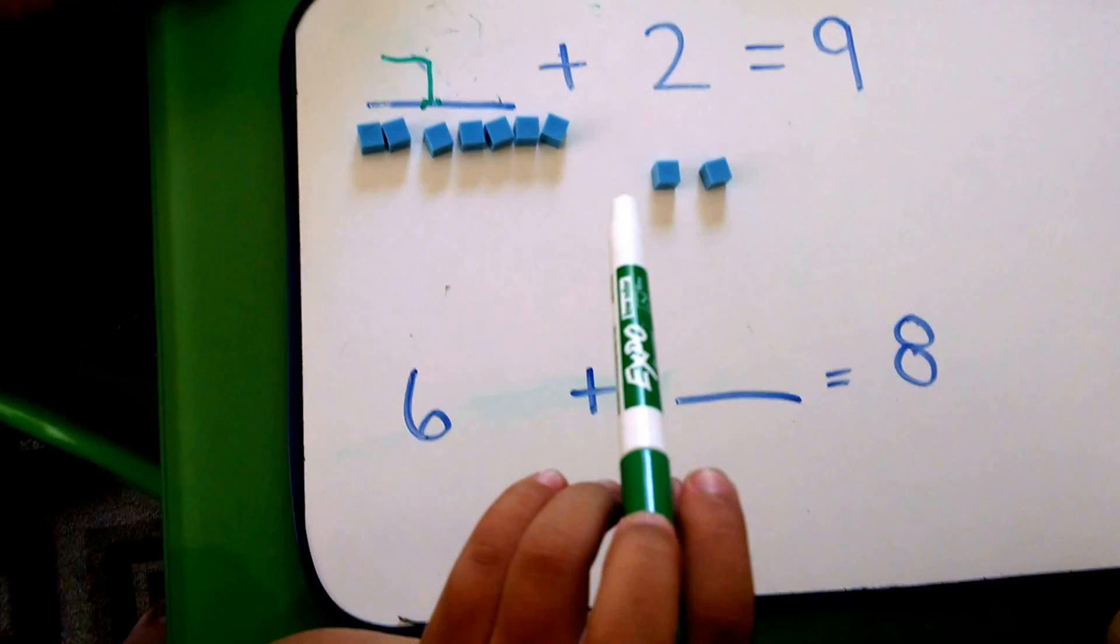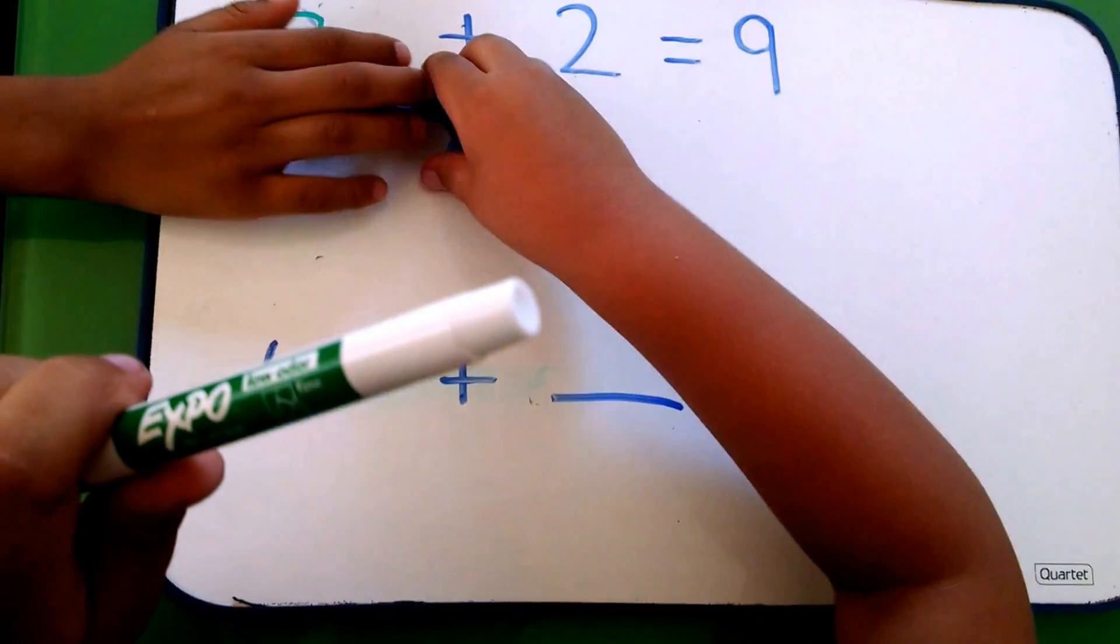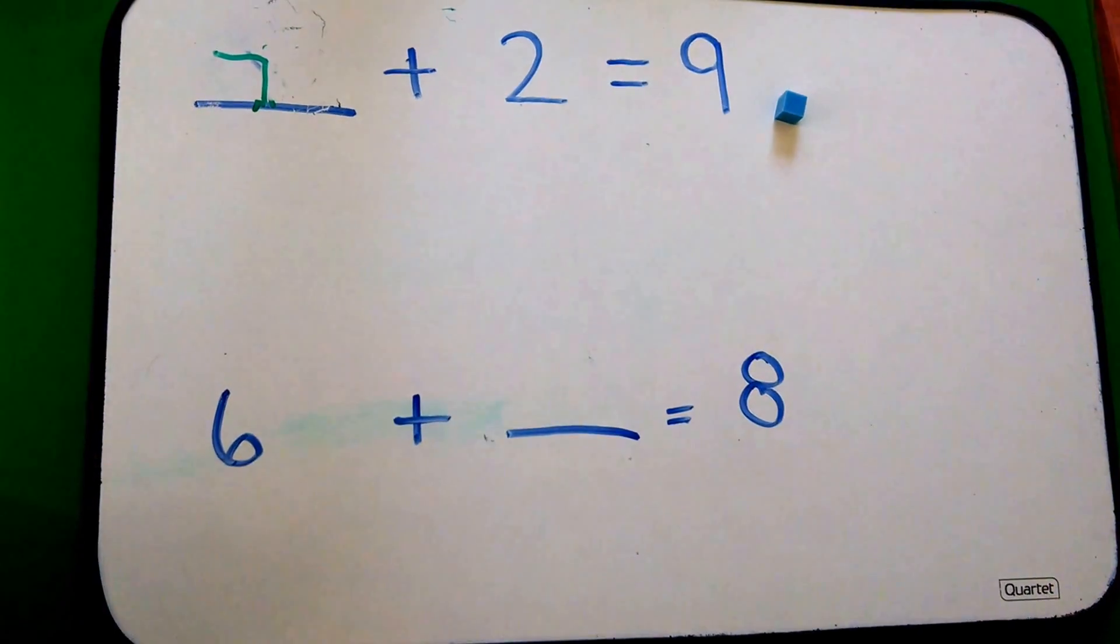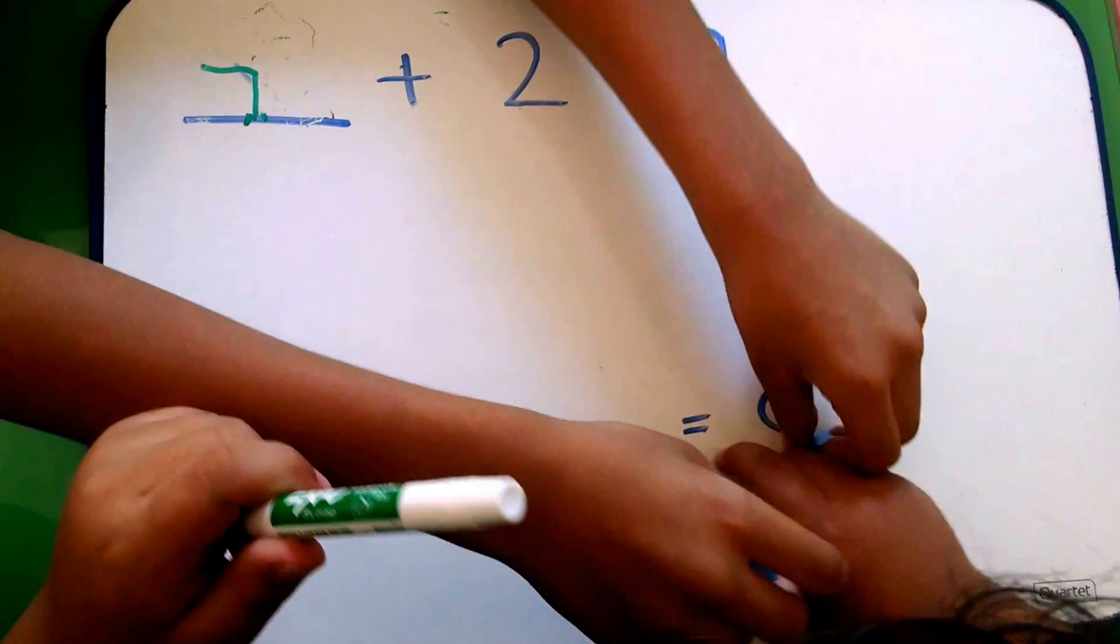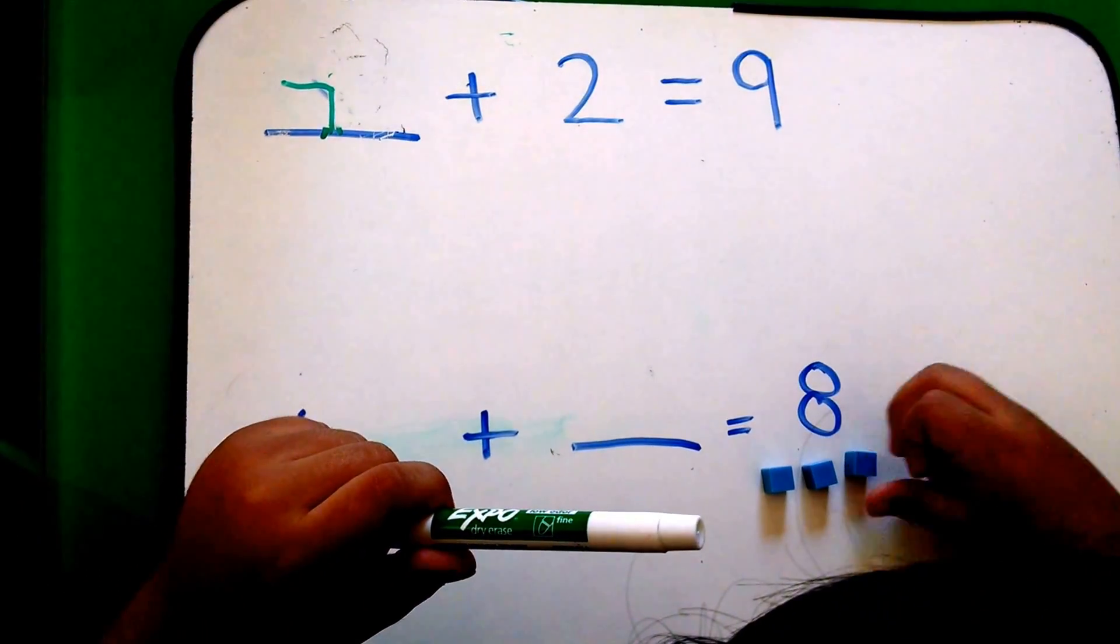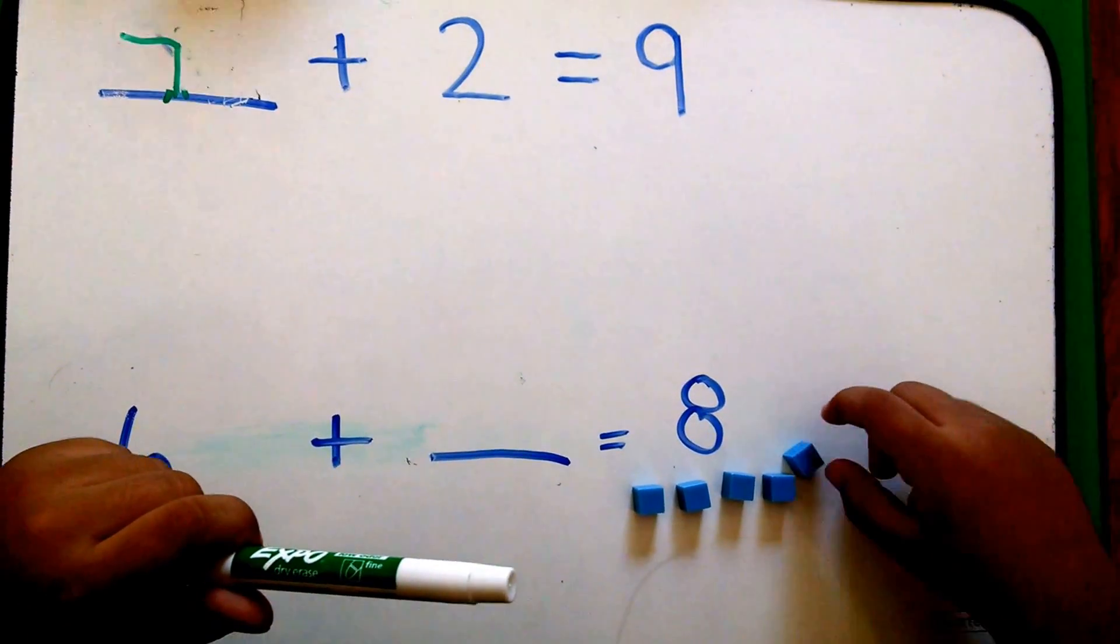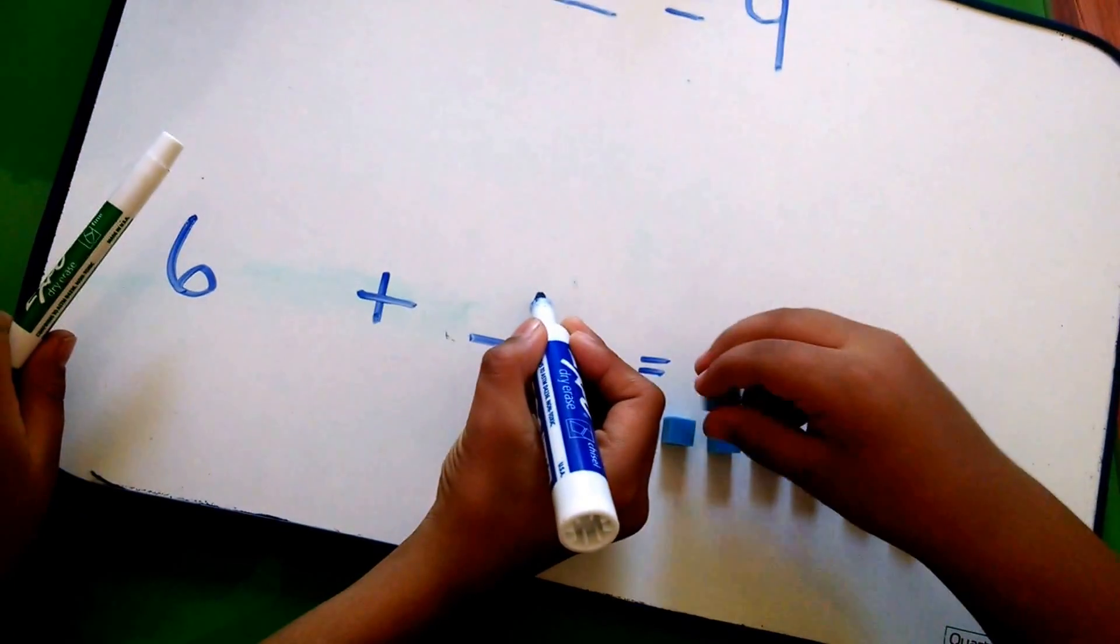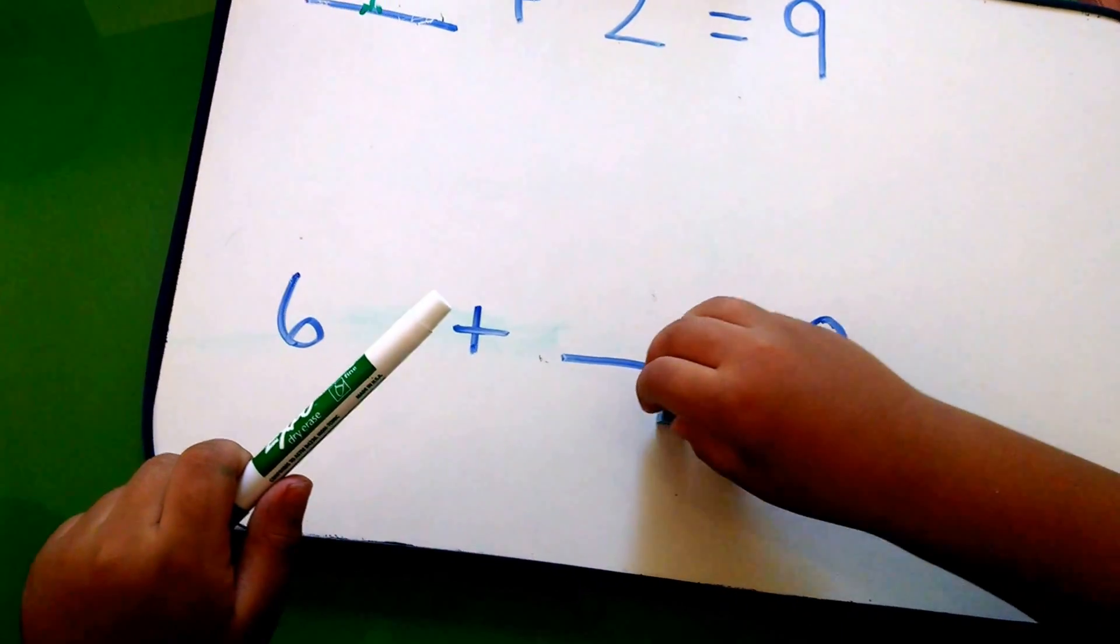And then the next, the second round is kind of easy. So you're going to take away the blocks from the nine. Put one next to the nine because you'll need that one. So you put one, two, three, four, five, six, seven, eight. There.